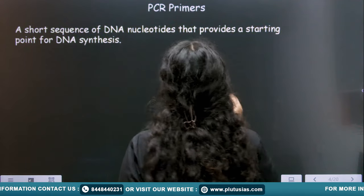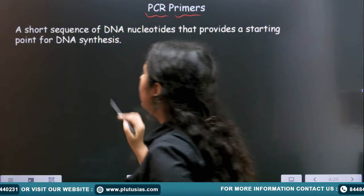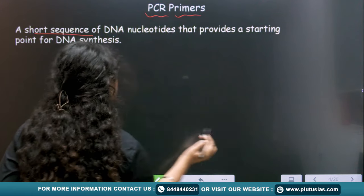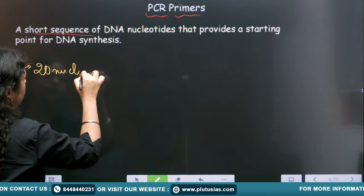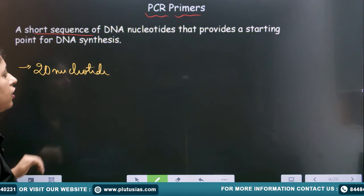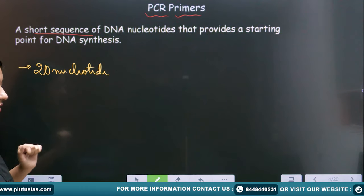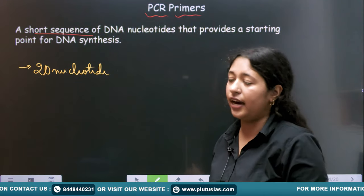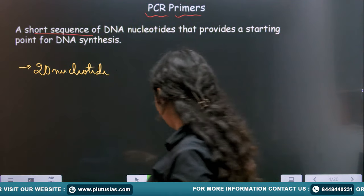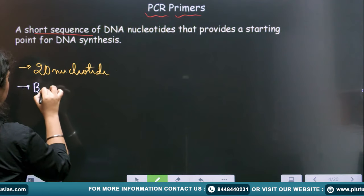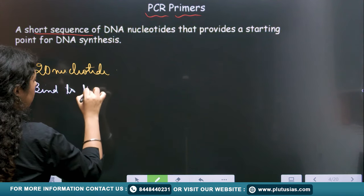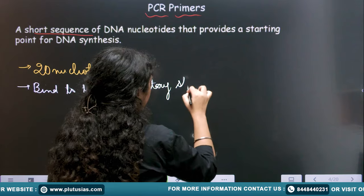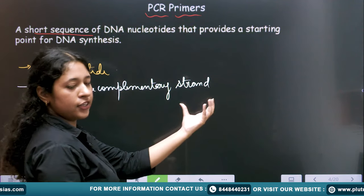One of the most important components is PCR primers. A primer is a short sequence of DNA — it should be of about 20 nucleotides. This sequence provides a starting point for DNA synthesis. The job of the primer is to bind to the complementary strand of the target DNA.